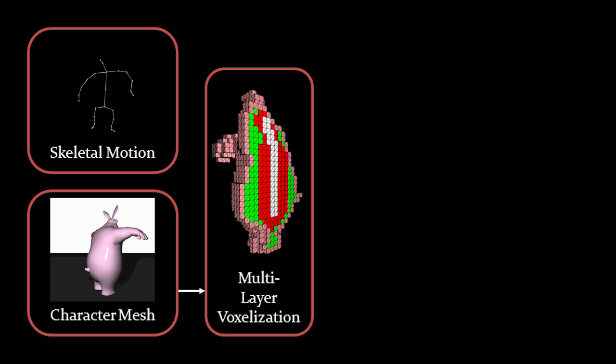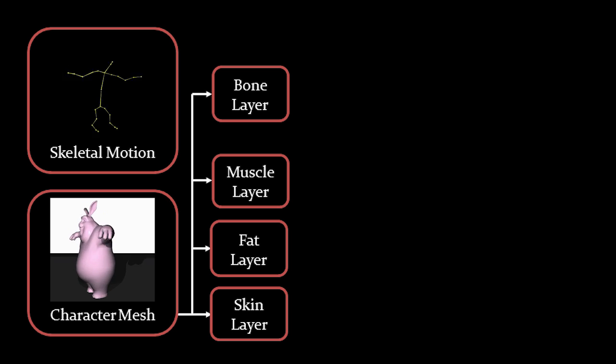Our system first voxelizes the mesh into multiple anatomical tissue layers, including the bone, muscle, fat, and skin.